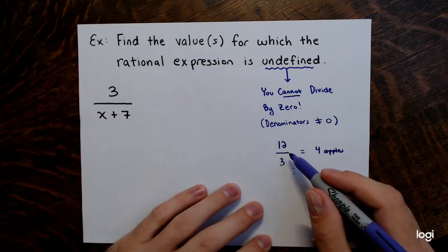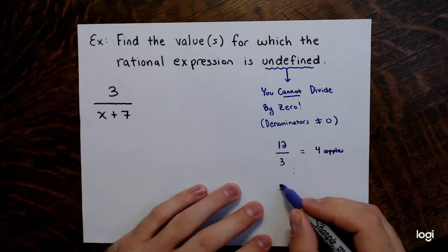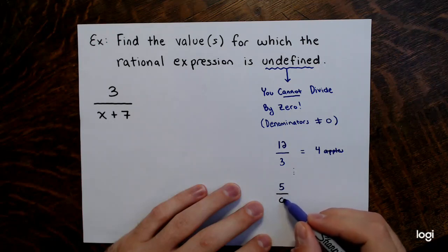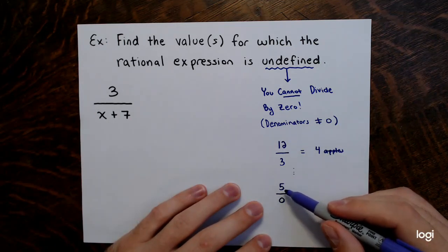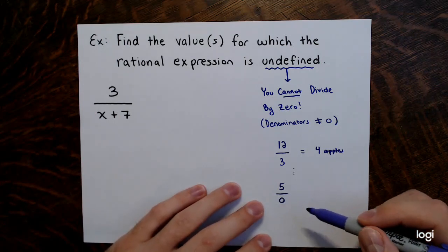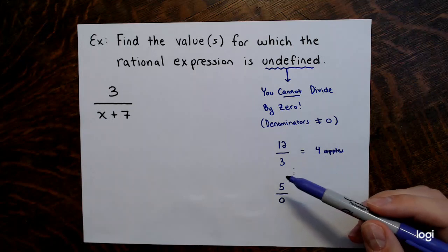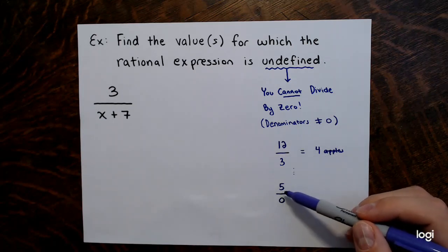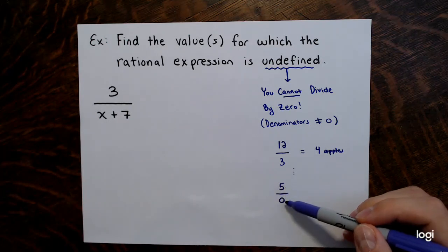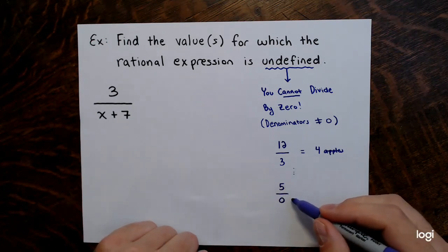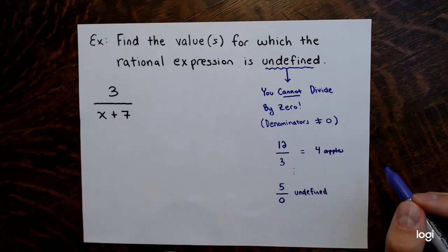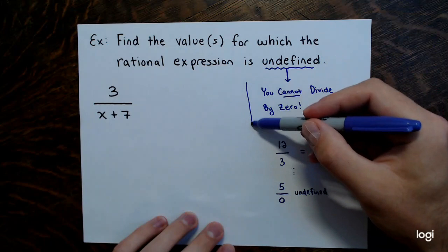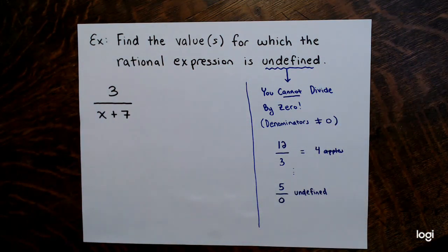But if I have 5 apples and I say divide that by zero — give these 5 apples to no one — that doesn't make any sense. How can I give 5 apples to zero people? This doesn't make sense, and it's considered an undefined operation. So dividing by zero is undefined.